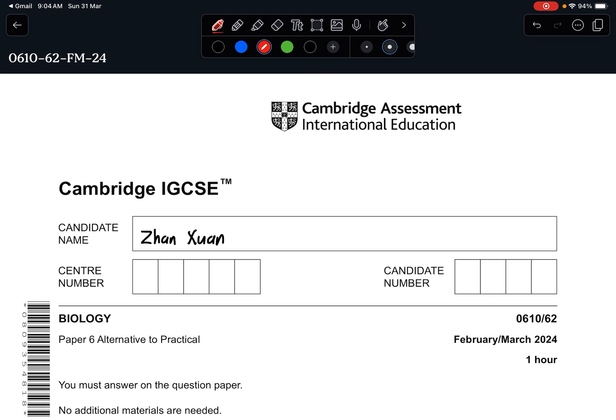Hey guys, welcome back to a new video by Biology with Zhang Xuan. Today we are going to run through the Cambridge IGCSE Biology Paper 6, Alternative to Practical. This is the February March 2024, 061062. The link of the paper will be in the description below together with the paper 4 that I discussed earlier on. So let's start off with this video.